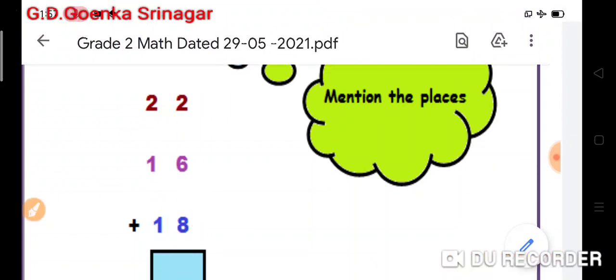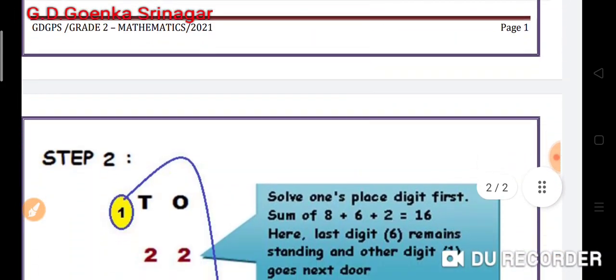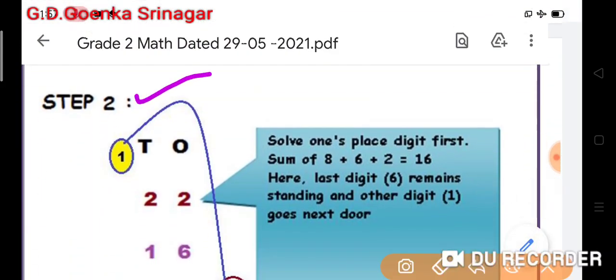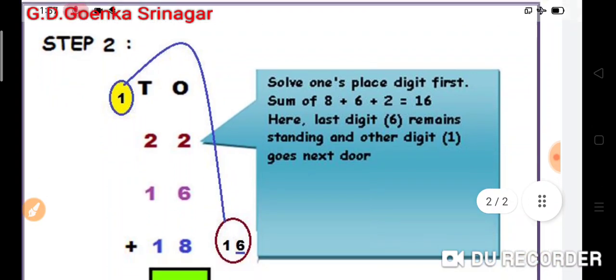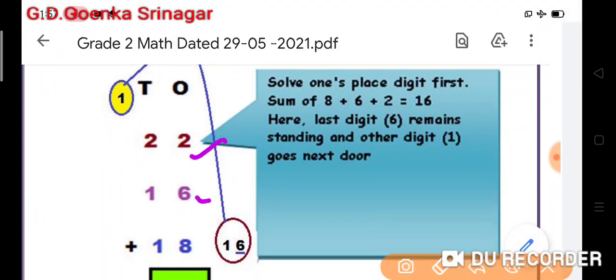Step two: solve the ones place digits first. I have to start by adding the digits at the ones place. The sum of 8 plus 6 plus 2 is equal to 16, where 8 is the bigger number. I'll keep it in my mind.